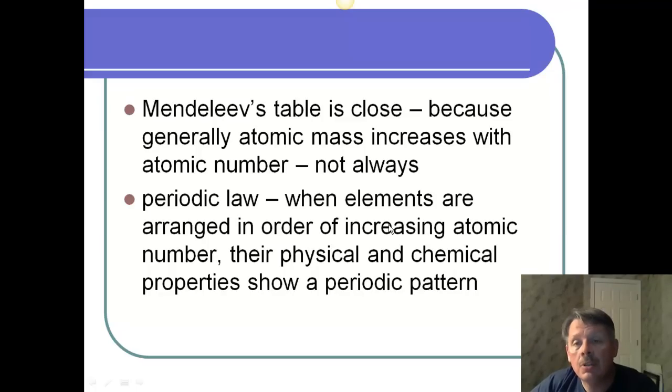So, Mendeleev's table was close because generally atomic mass increases with atomic number, but that does not always happen. So, now, Mosley and the people after him were able to come up with a periodic law. And the periodic law states, when elements are arranged in order of increasing atomic number. Now, guys, I can't stress that enough. That's very, very important that it's atomic number. It's not atomic mass. It's atomic number. It's number of protons. Then their physical and chemical properties show a periodic pattern. So, as long as we organize them by atomic number, their physical and chemical properties show us a periodic pattern, which leads us directly into the modern periodic table, which is going to be our next podcast.